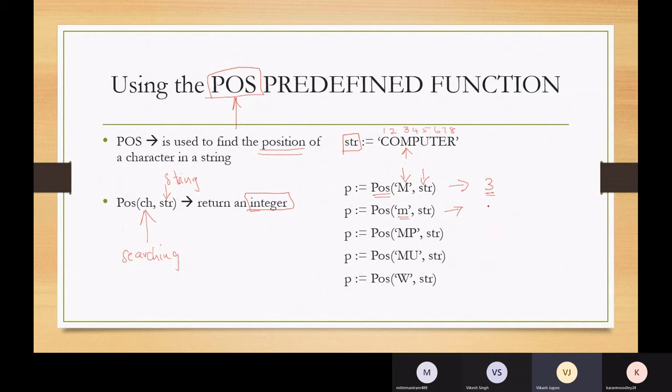So it's not going to find the small letter m. So in this case, it's going to return 0. Whenever you're searching for something and it's not in the string, it will return 0.